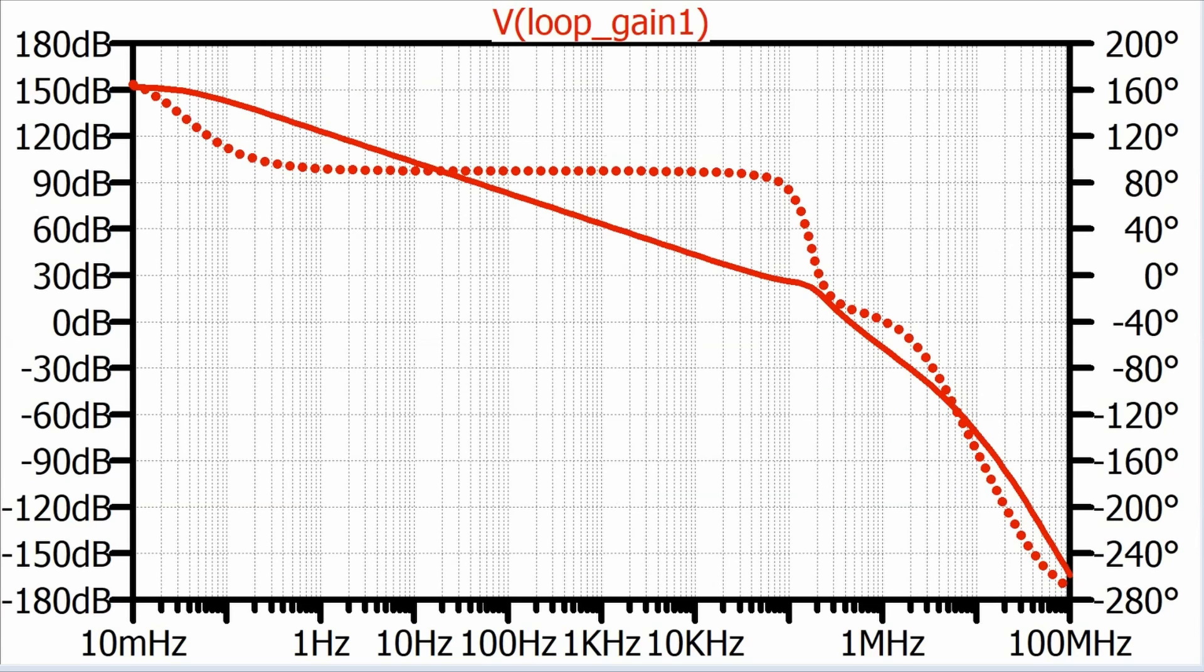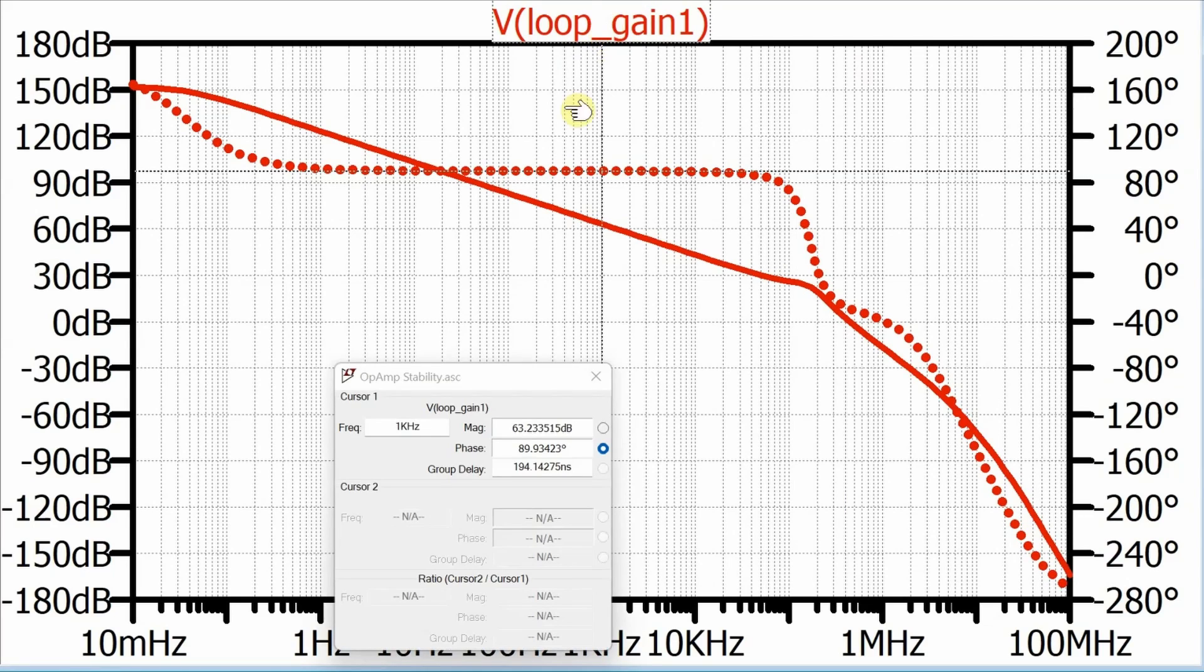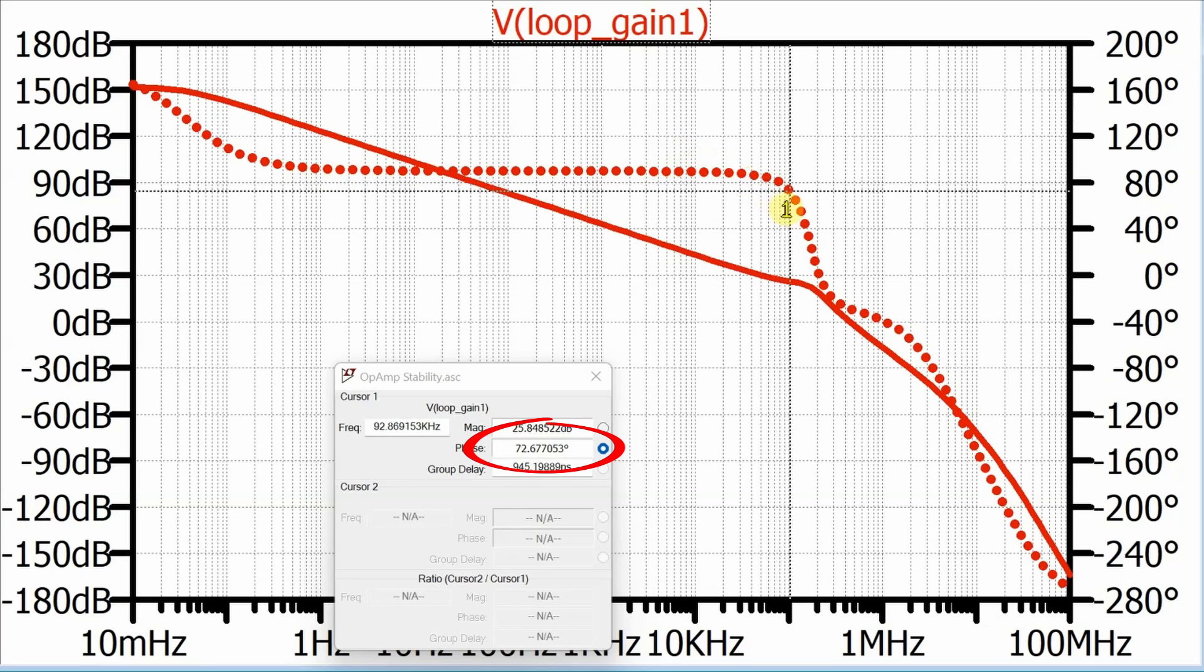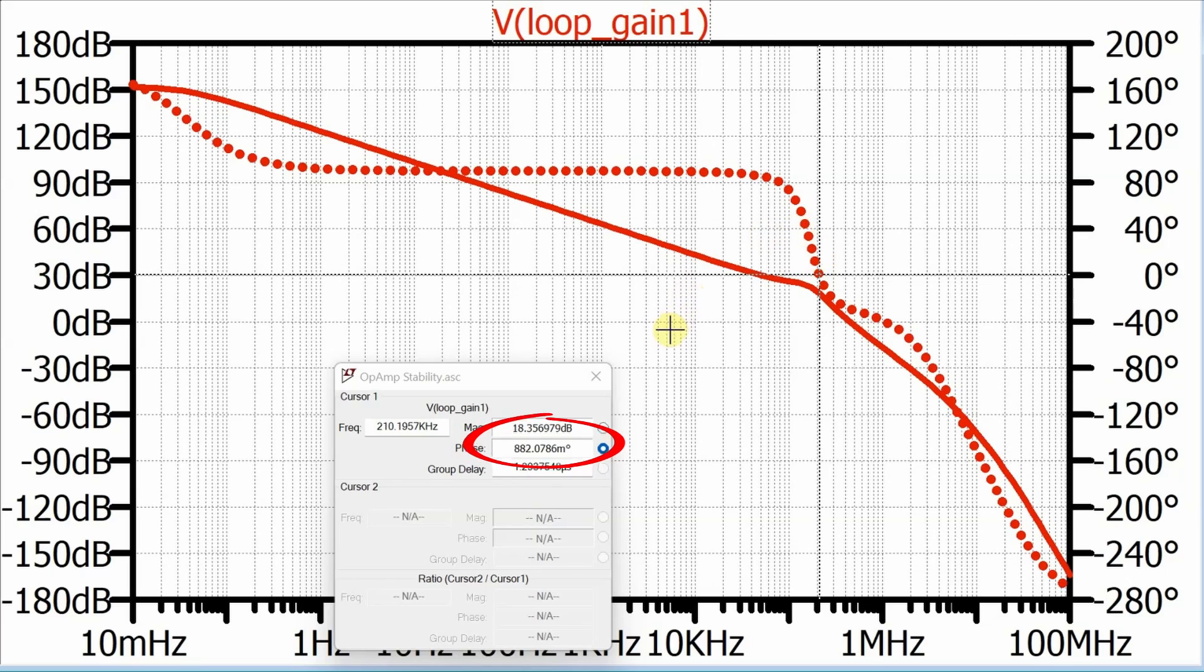So here's the new loop gain plot for that same circuit, but with that 10 nanofarad capacitor connected at the output. And I can click on it to get my cursors to come up again, drag this over to the point where the phase drops to zero. All right, let's go with that. And look at the magnitude of the gain. 18.35 decibels. Far more than zero dB.